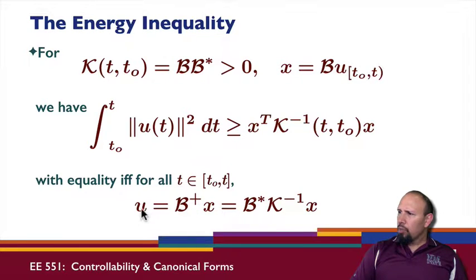In particular, what's happening is that this inequality, I get equality here if I have a particular control signal. If I pick a particular control signal, I can get equality in this. Basically, this shows that this provides a boundary for the control energy.